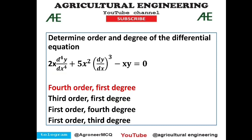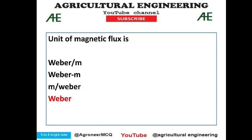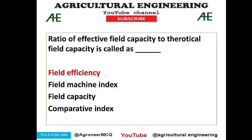Next question: determine the order and degree of the differential equation. You can be confused between degree and order — here the order is 4 and the degree is 1, so option 1 is correct. Then, the unit of magnetic flux is Weber. The ratio of effective field capacity to theoretical field capacity is called field efficiency — option 1 is correct.